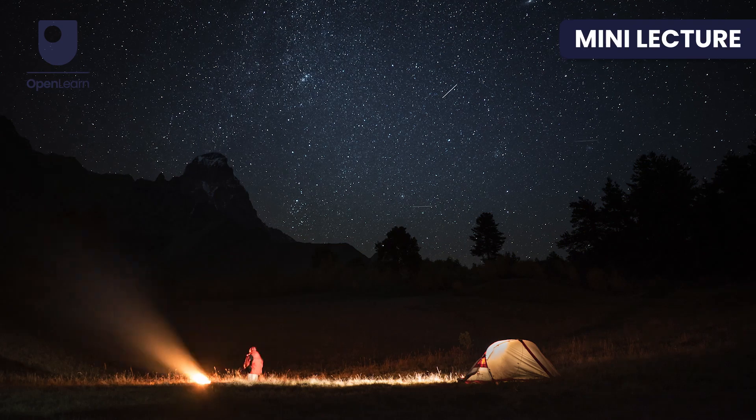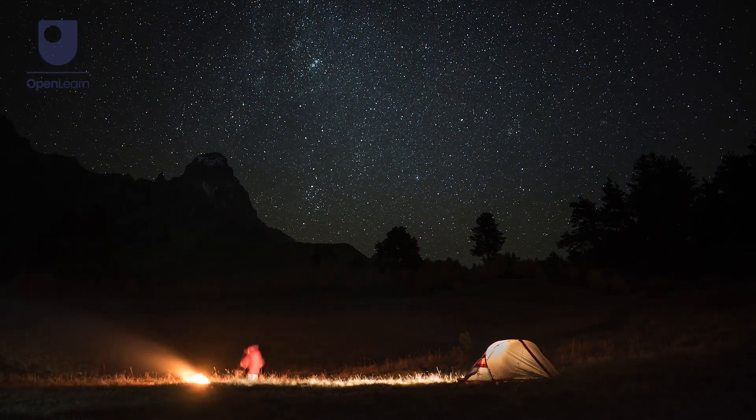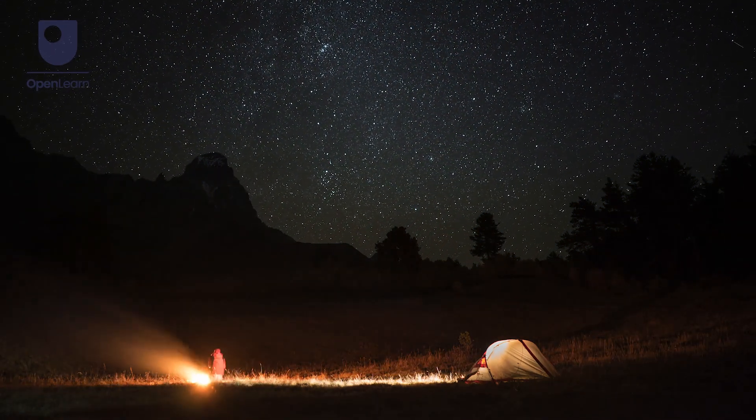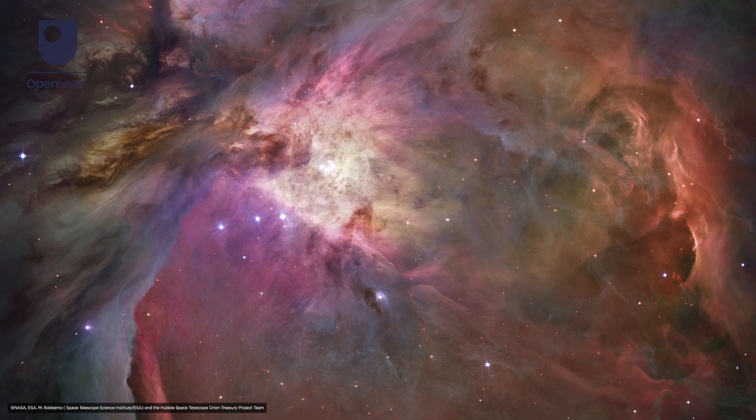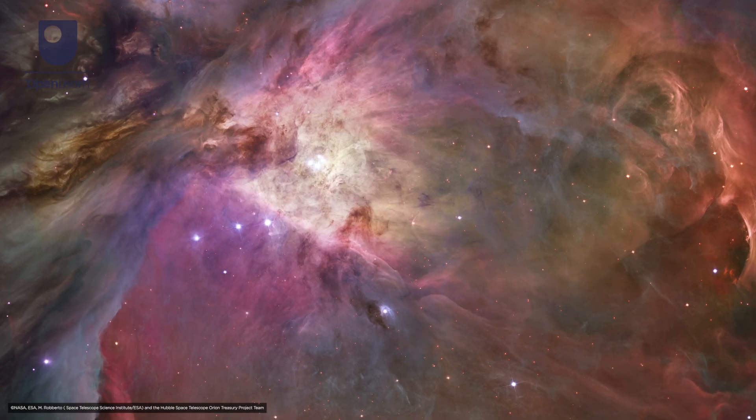A little over four and a half billion years ago, the Sun and our solar system did not exist. Instead, there was a huge cloud of gas, mainly hydrogen and helium, left over from the Big Bang.